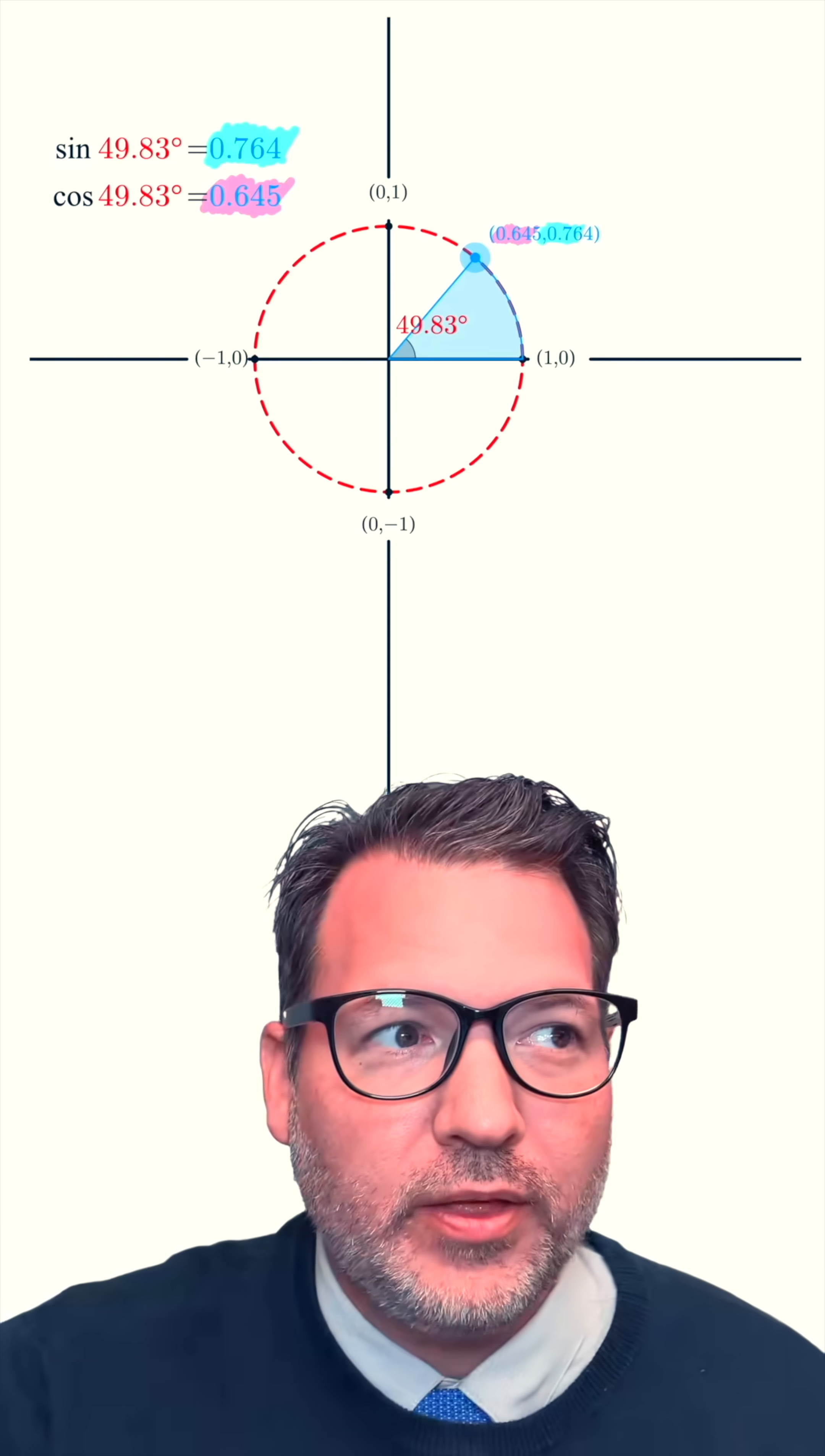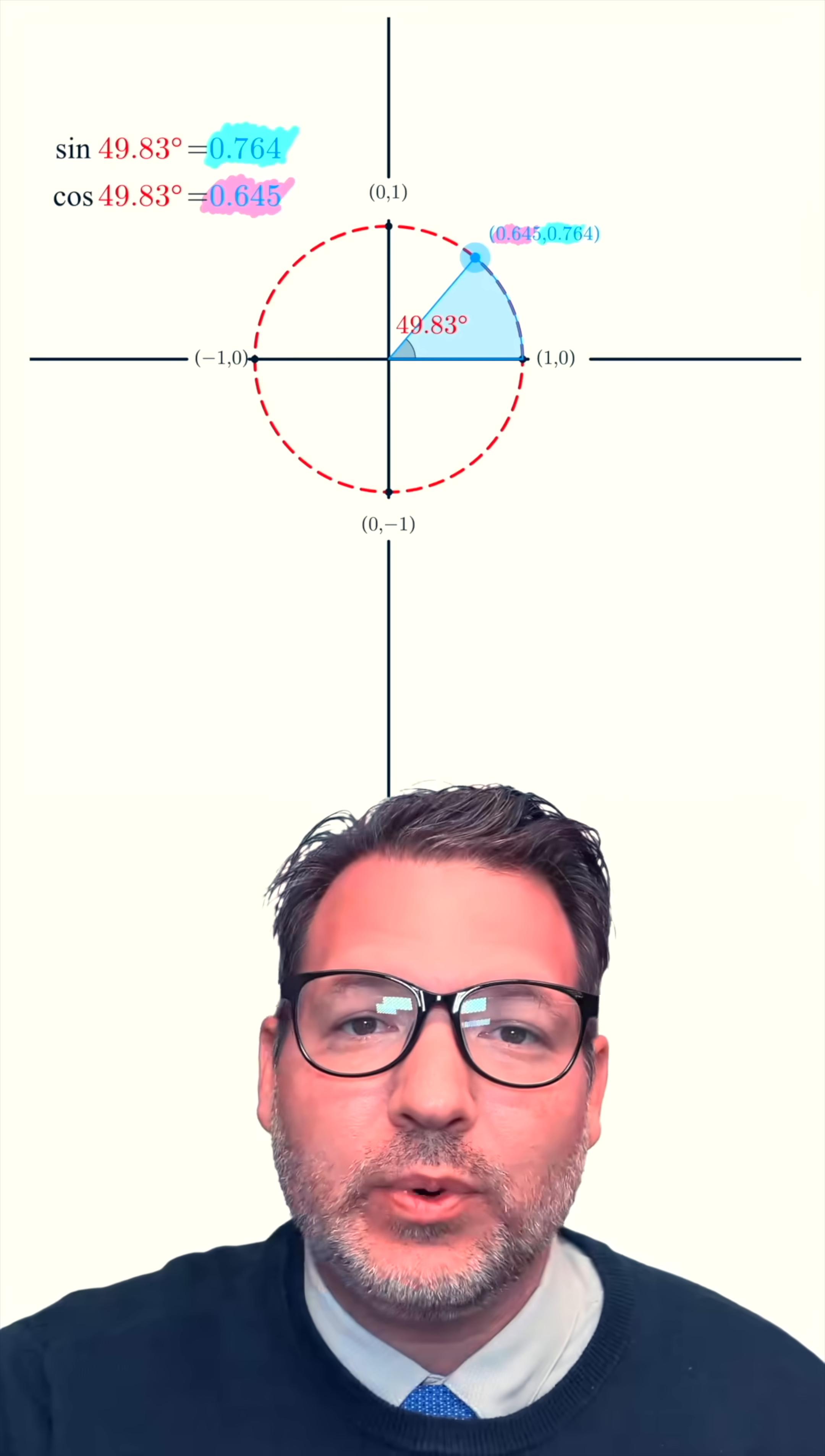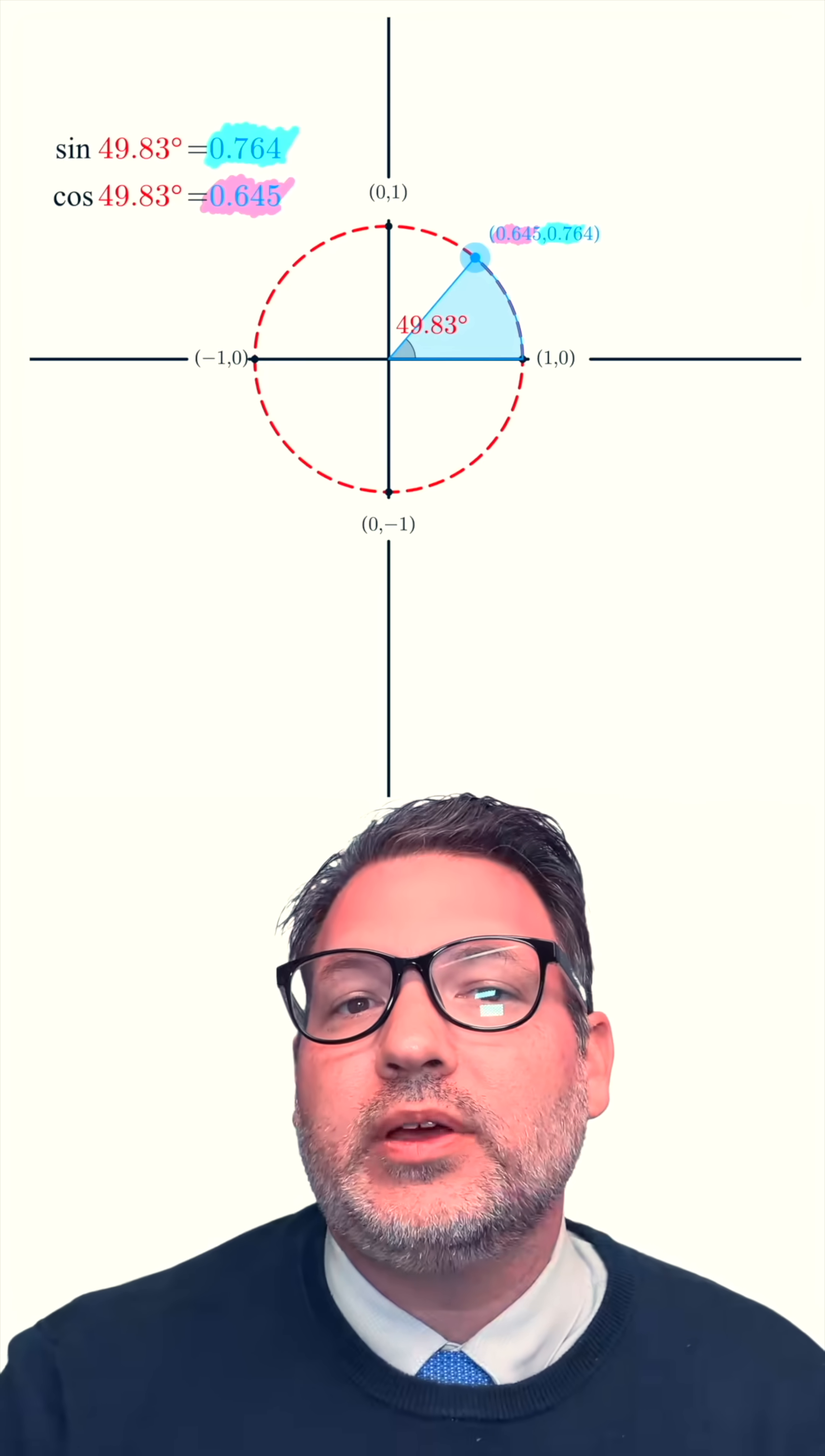The Y coordinate, on the other hand, always seems to correspond to our sine value. And this is because that's exactly what sine and cosine are. Sine and cosine are just different ways to talk about the X and Y coordinates on the edge of this circle that we call the unit circle. A unit circle because it has a radius of one unit.